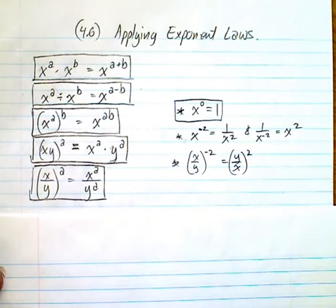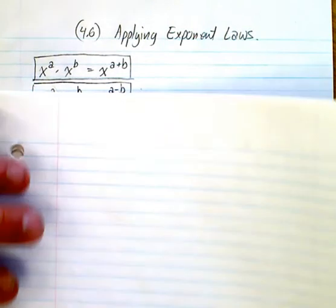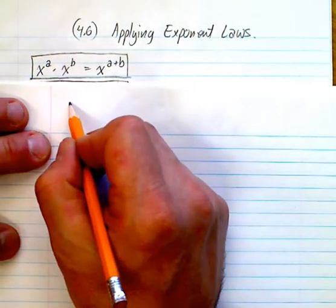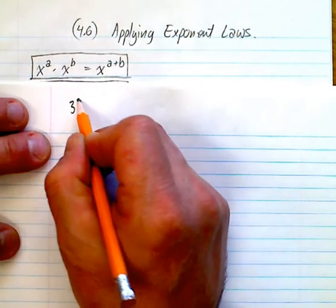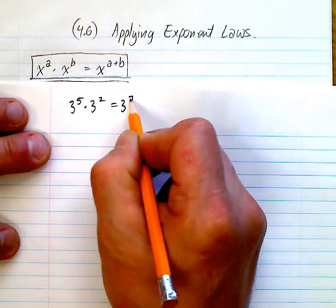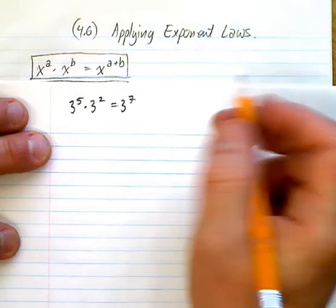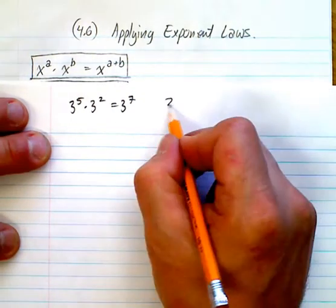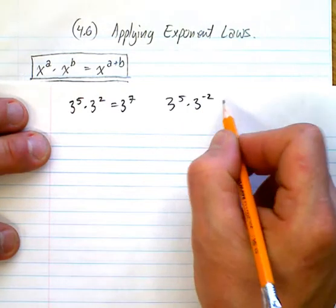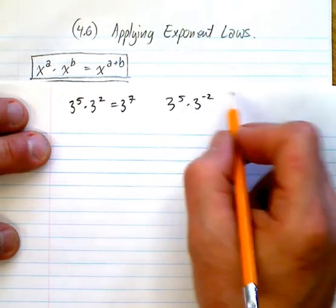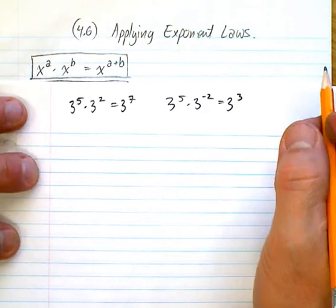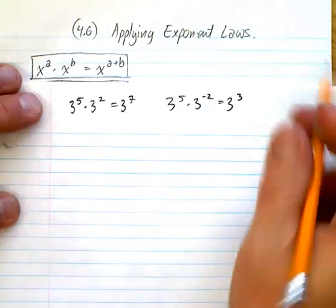What I'd like to do is give you a quick example of each one. For the product law, if I had 3 to the power of 5 times 3 to the power of 2, that's 3 to the power of 7. What about 3 to the power of 5 times 3 to the power of negative 2? When you add 5 and negative 2, you get 3 to the power of 3.